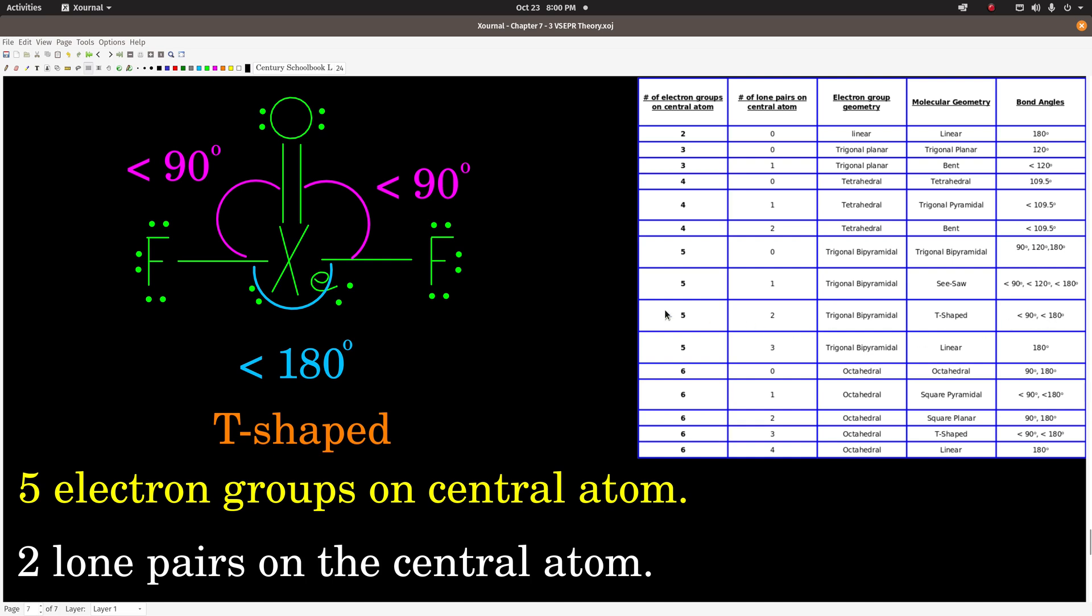So these lone pairs here are on top, pushing away these bond pairs. These bond pairs are being pushed closer than 90 degrees, so the angles here are a little bit less than 90 degrees, whereas the angle on the outside here is going to be a little bit less than 180. That's all there is to it, guys.